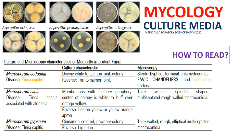What is the importance of knowing the reverse plate characteristic or pigmentation? For example, if you observe this slide, we have Microsporum genus with different species. Each species has a different reverse plate characteristic. For example, for M. canis, you have a reverse plate characterization of lemon yellow or yellow-orange, compared to M. gypseum which is lighter. That is the importance of reading your reverse plate.